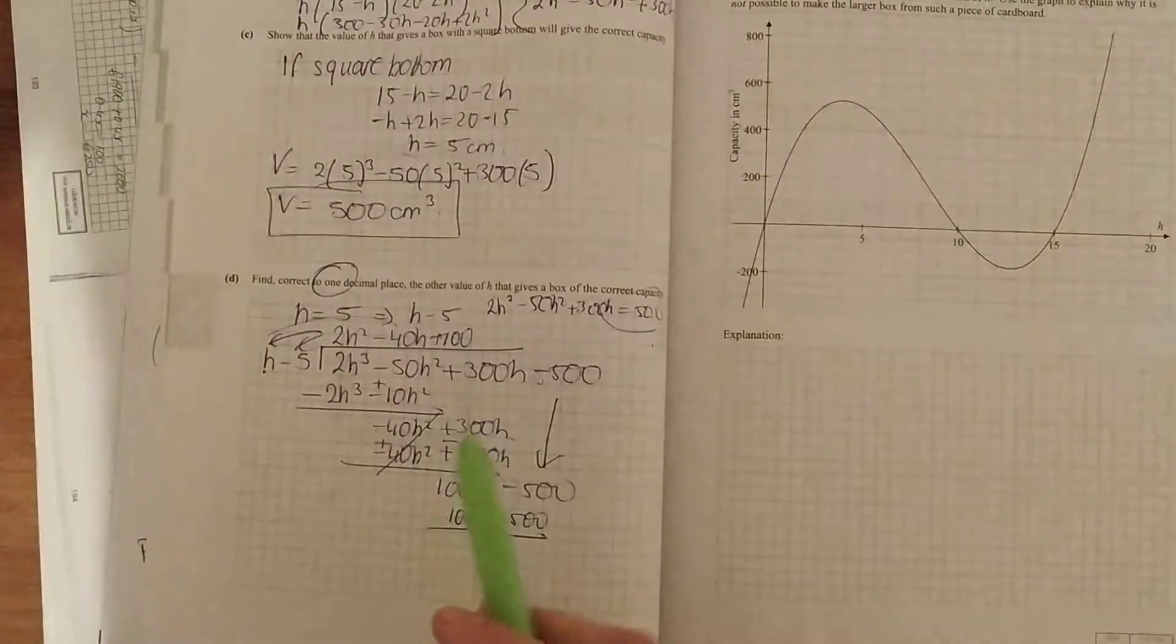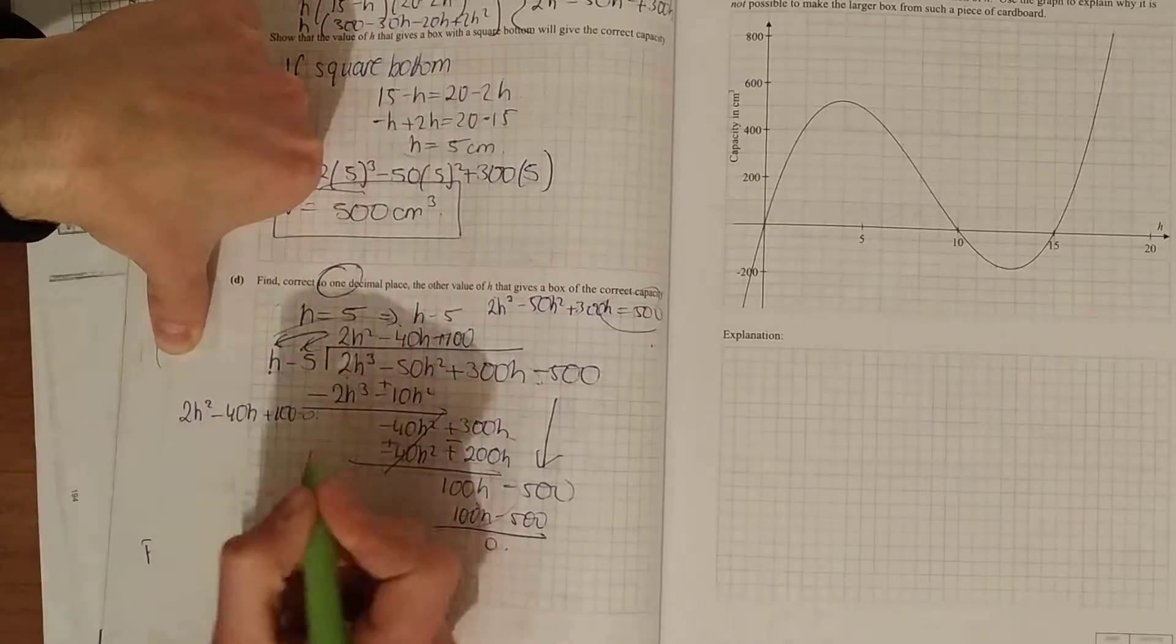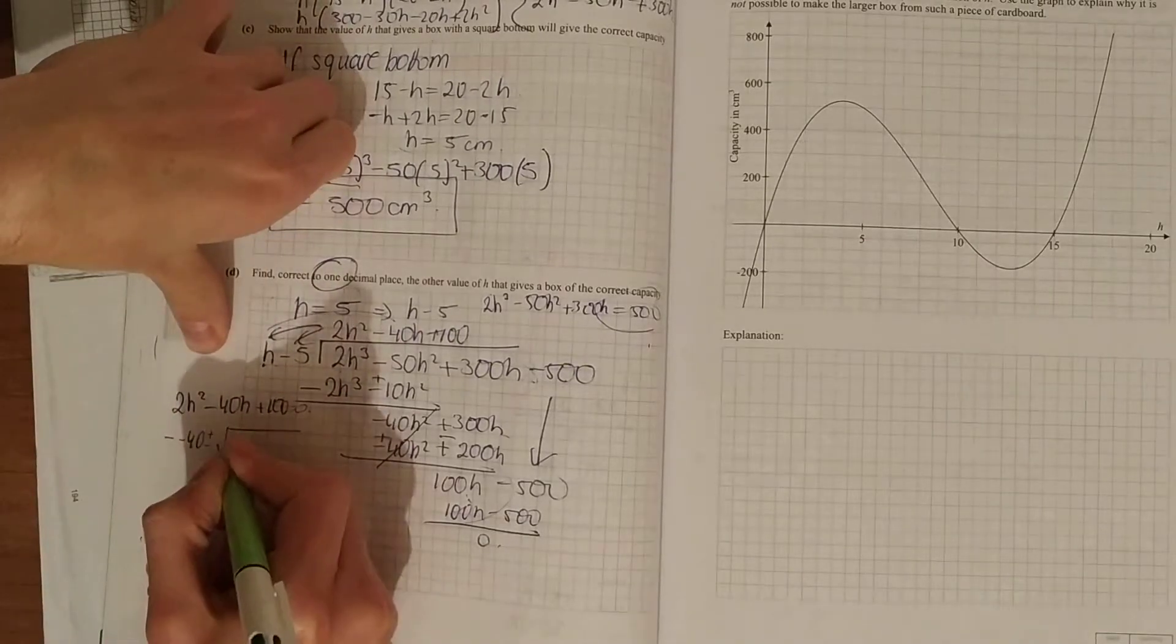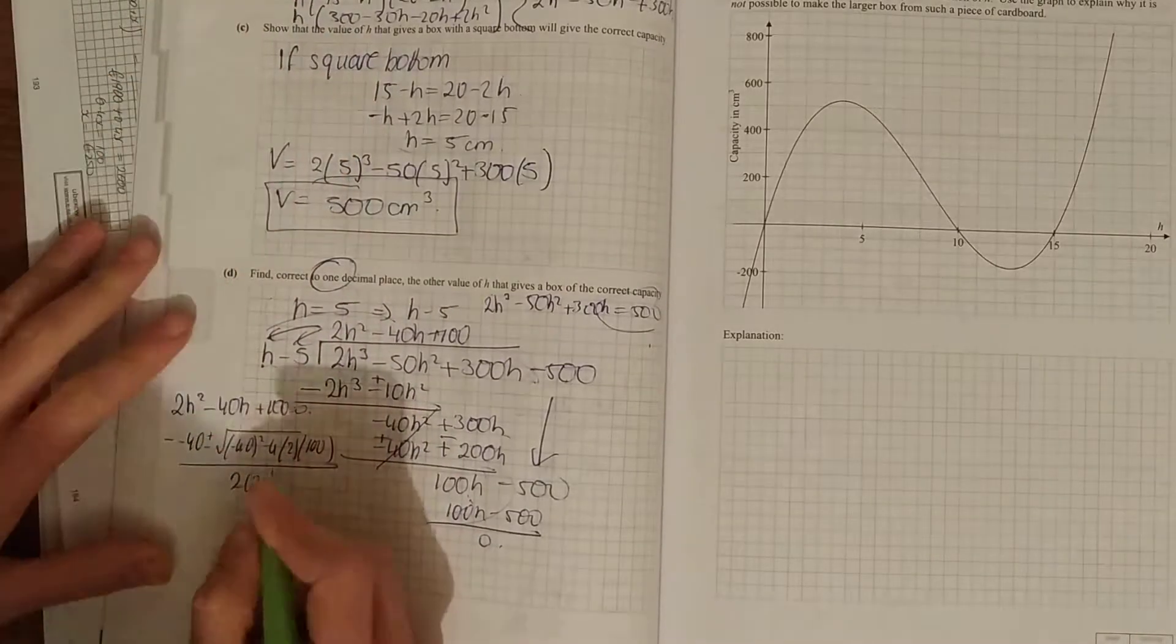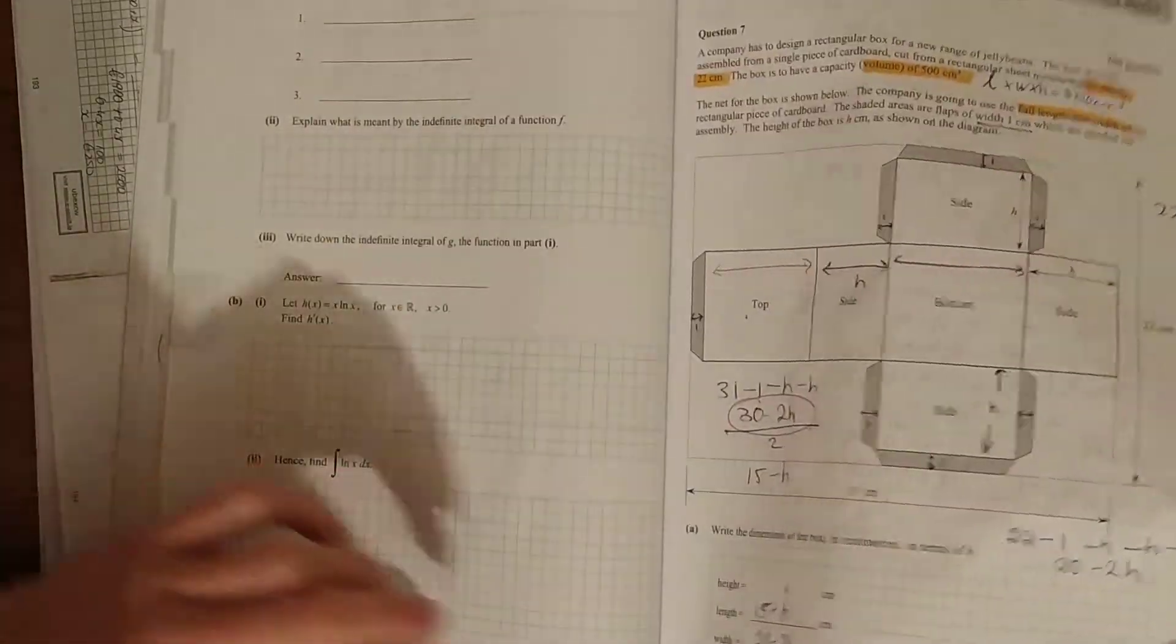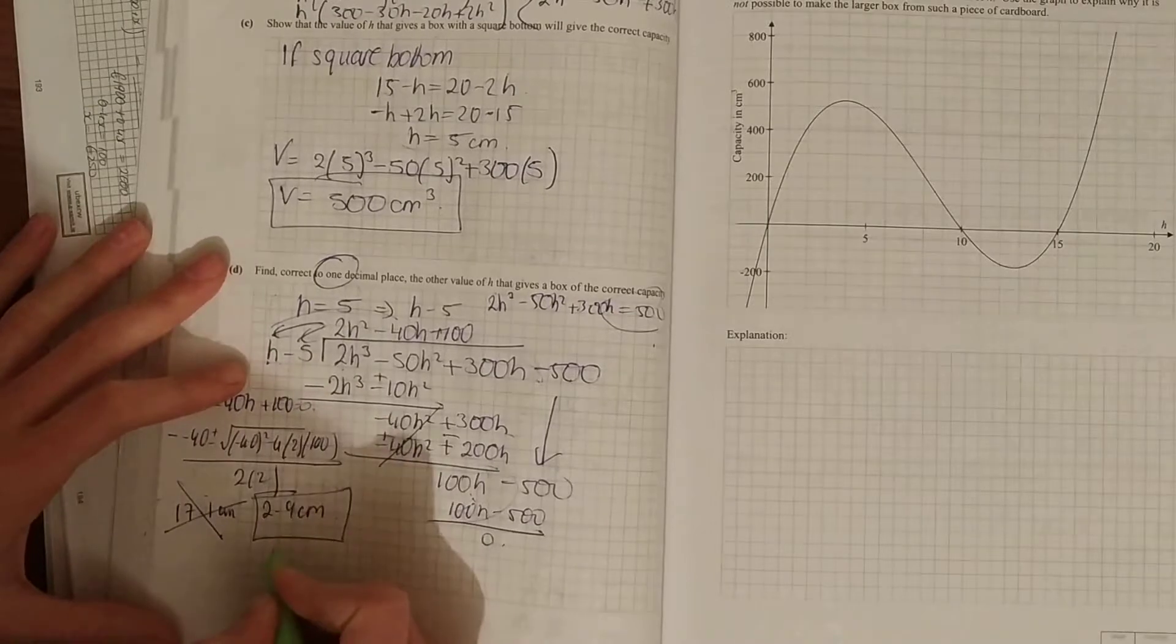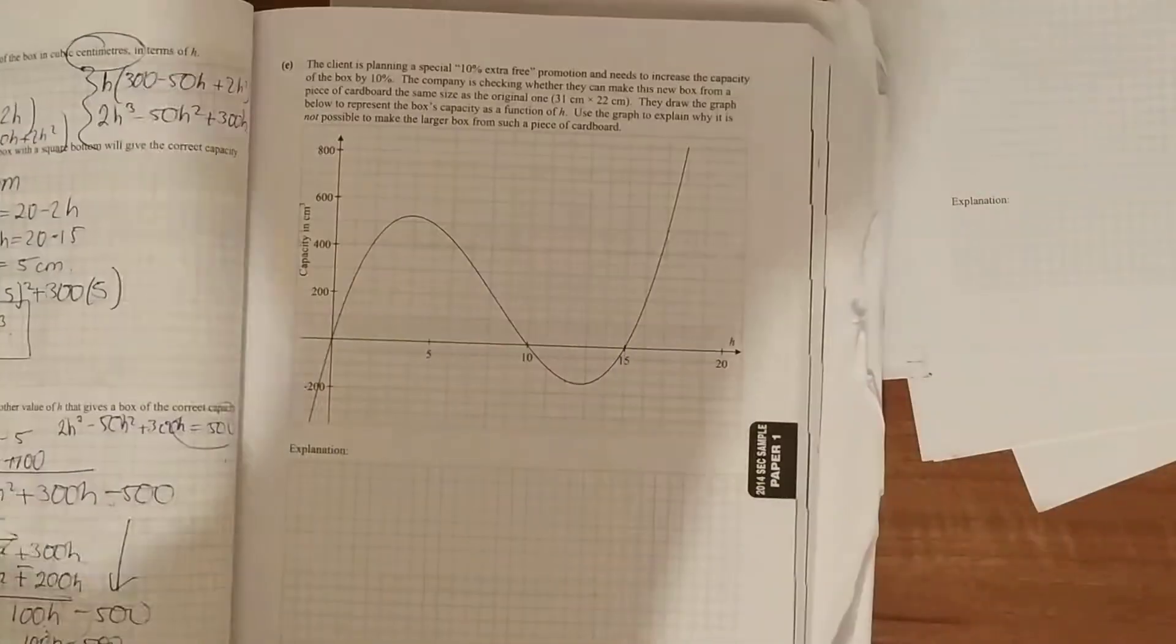Now you're left with the quadratic up here, solve your quadratic. It says to one decimal place, it's more likely to use your minus b formula. So minus minus 40 plus or minus square root of b squared minus 4ac all over 2a. Put that in your calculator, you get two answers: one is 17.1 and one is 2.9 centimeters. Now you cannot have 17.1 because one of your values over here, 15 minus h, 15 minus 17.1 gives you negative. So there you go, h equals 2.9 centimeters. If you solve that back into your volume, it should give you the same value of 500.